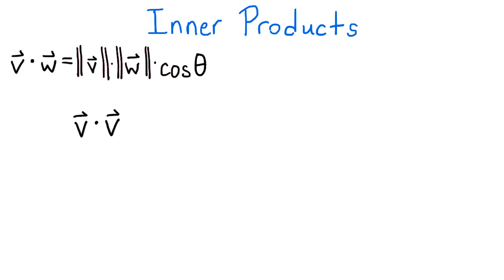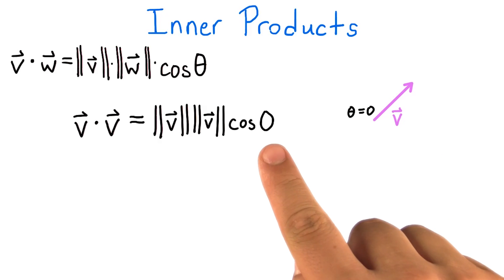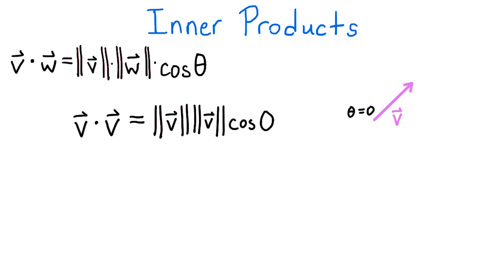One last thing to consider is what happens when you take the dot product of a vector with itself. In this case, the angle between the two vectors is zero, both radians and degrees. So cosine of theta will equal one. So our formula reduces to v dot v equals the magnitude of v squared. After a little rearrangement, we can see that the magnitude of v equals the square root of v dot v. This gives us another interpretation of the magnitude of a vector, this time in terms of its dot product.